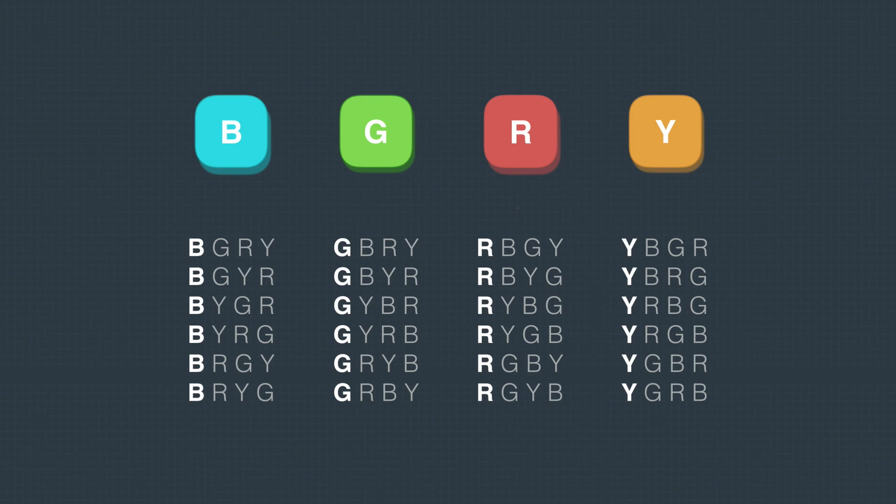In the previous lecture we have learned about the permutation of objects wherein we have taken four objects B, G, R and Y and we found that the number of permutations were 24 and those permutations are the ones which are listed on the screen here. By default we assume that all the four objects were different. Now what if some of the objects are same?